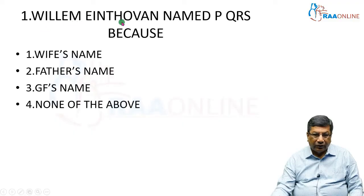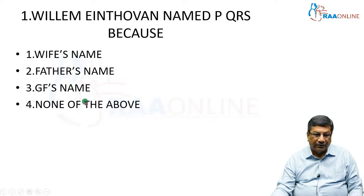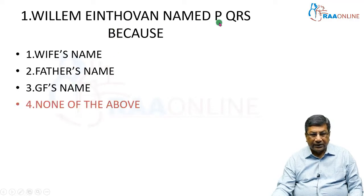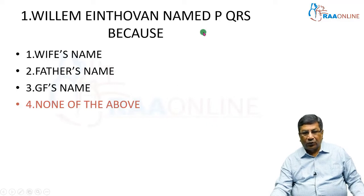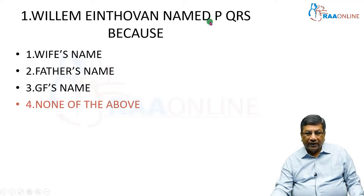The first question is: William Einthoven named PQRST because of his wife's name, father's name, girlfriend's name, or son — none of the above. The answer is none of the above, because William Einthoven named PQRST because he wanted to start with O, but he did not want to start with zero, so he selected the next letter, P.